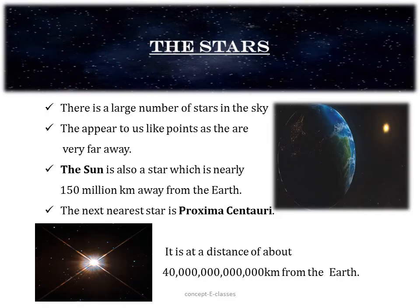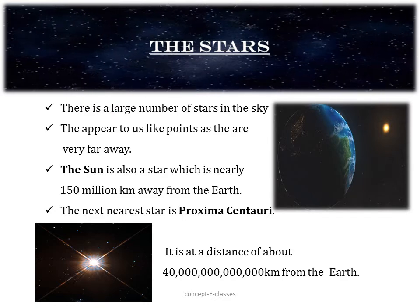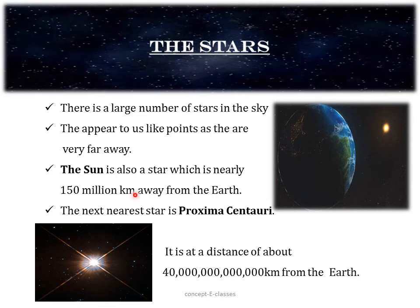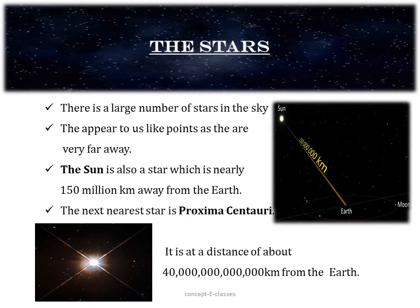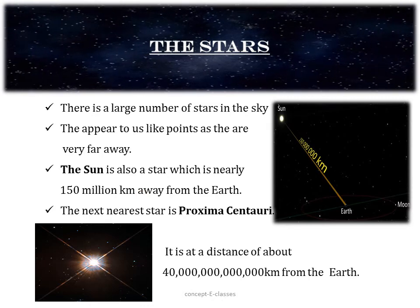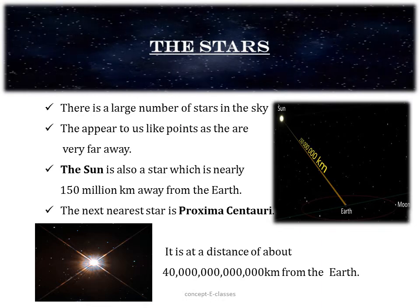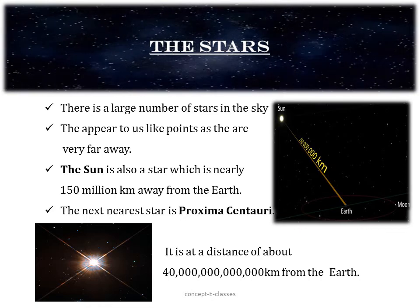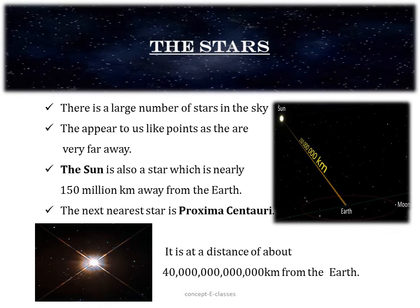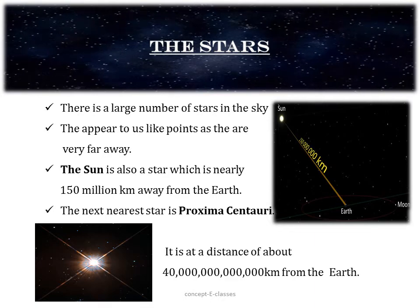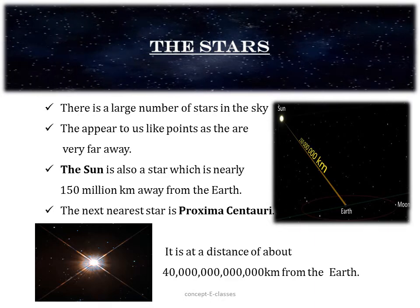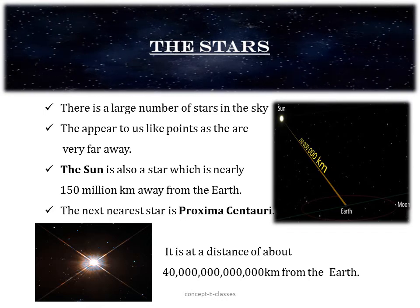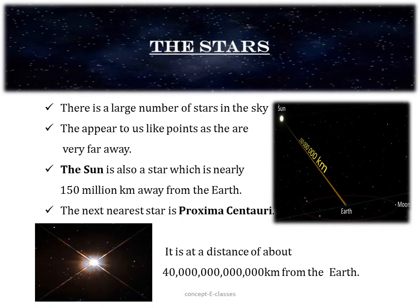There are a large number of stars in the sky and they appear to us like small points because they are very, very far away. The sun is also a star and it is about 150 million kilometers away from the earth. If the sun is a star, then why does it appear large compared to other stars? This can be understood by a simple example: if we place a football near you, it appears bigger, whereas if it is about 100 meters away, it appears smaller. Similarly, the stars are millions of times farther away than the sun, and therefore they appear as small points.